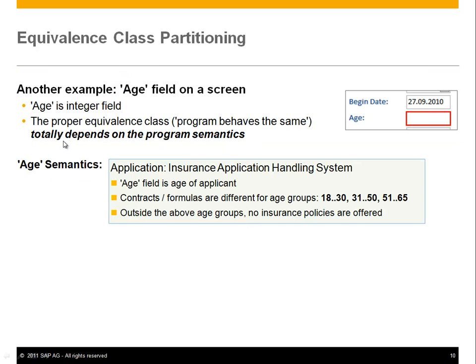Consider another example. Say you have a field on the screen called age. How would you test this? The proper equivalence classing, where the program behaves the same, is totally dependent on program semantics — it's a little less obvious here. You really need to know about the program and what it's supposed to do.